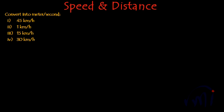In this video we are going to solve problems related to the conversion of units. The problem statement says convert into meters per second. We are given four speeds which are in kilometers per hour, and we have to convert them into meters per second. The second one — one kilometer per hour — is the simplest, and we have to convert this speed into meters per second.